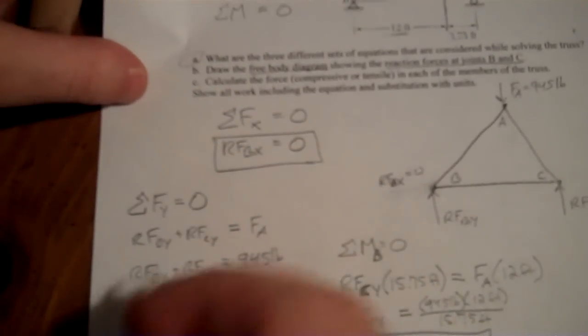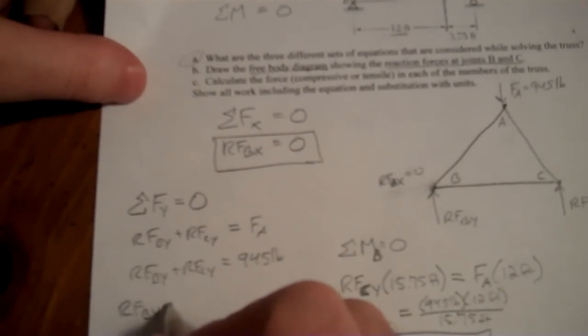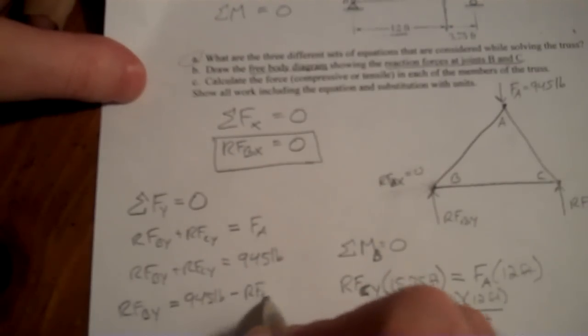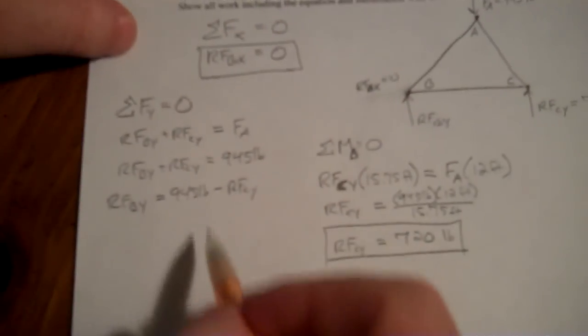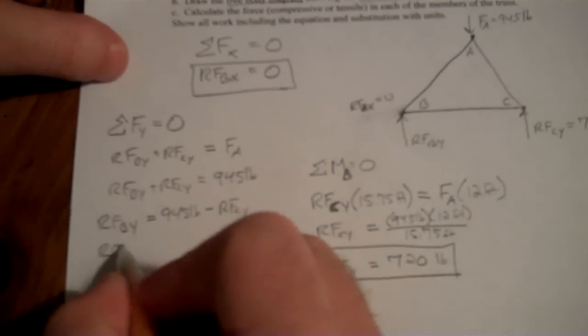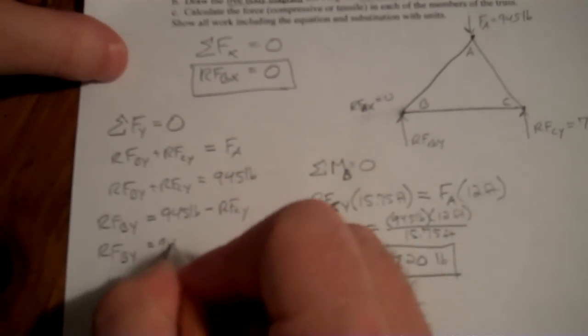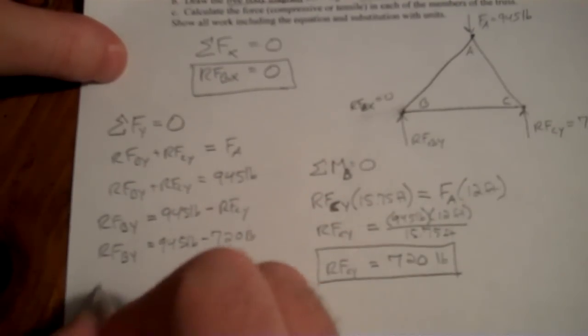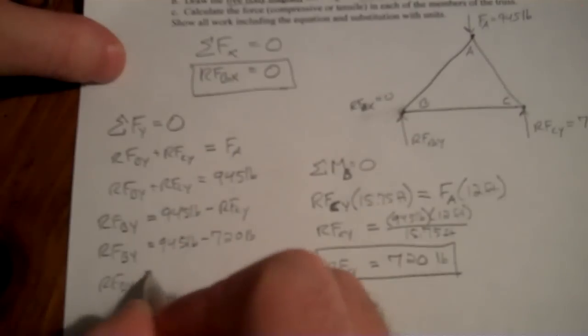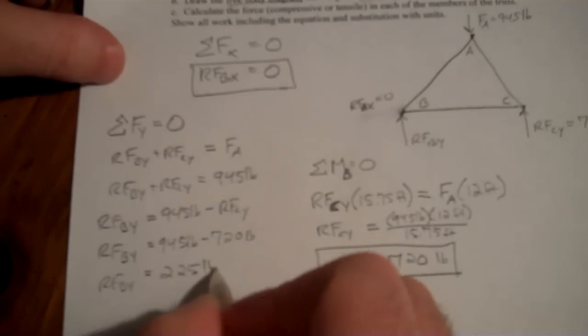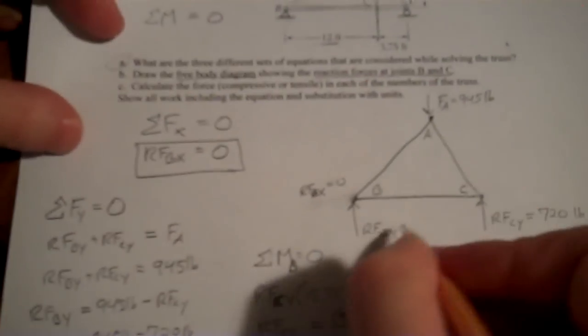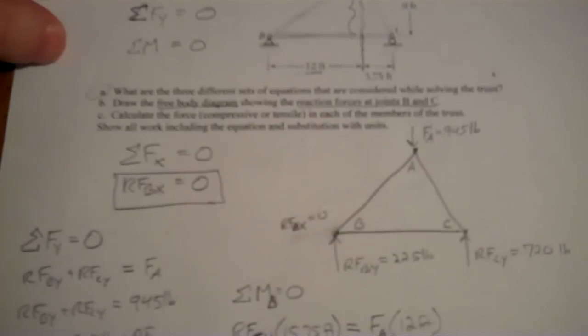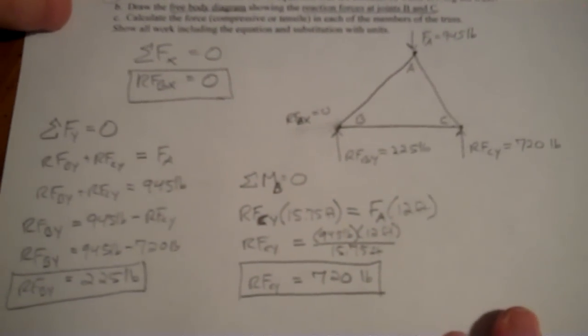Well, I can take this right back over here. So, RF,B,Y is equal to 945 minus RF,C,Y. Again, I just moved it from one side to the other. RF,B,Y is equal to 945 minus 720 pounds. RF,B,Y turns out to be 225 pounds. And we found all three of our reaction forces, 225 pounds. Great. Now, in the next part, we'll start going into calculating the member forces.